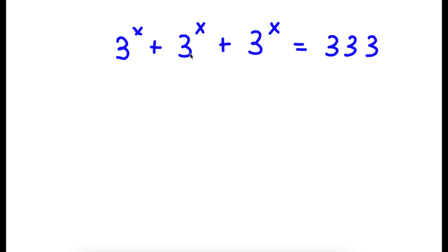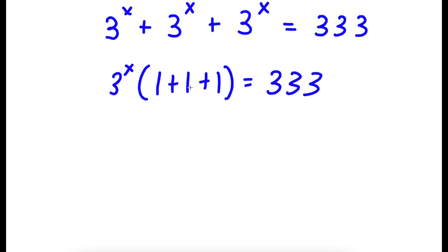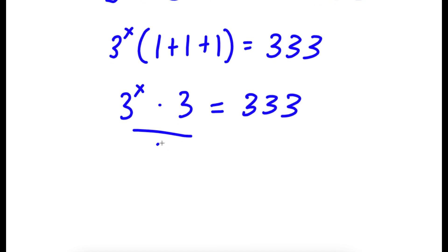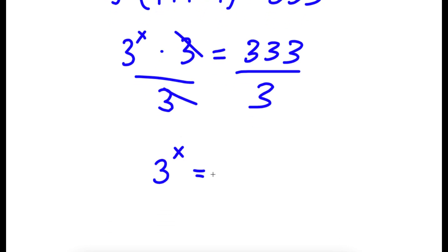In this problem, I have 3 to the power of x plus 3 to the power of x plus 3 to the power of x is equal to 333. To solve this, I'm going to start by factoring out 3 to the power of x. So 3 to the power of x times 1 plus 1 plus 1 is equal to 333. Now 1 plus 1 plus 1 equals 3, so I have 3 to the power of x times 3 is equal to 333. Dividing both sides by 3, I get 3 to the power of x is equal to 111.